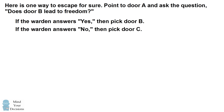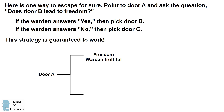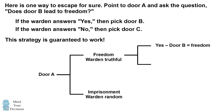This strategy is guaranteed to work regardless of the door type of A. So why does it work? Let's work through the logic. Door A can either lead to freedom, in which case the warden is truthful, or it could lead to imprisonment, in which case the warden answers randomly. Let's consider the first case that the door leads to freedom. In this case, if the warden answers yes to your question, then that means the warden is answering truthfully, and door B does lead to freedom.